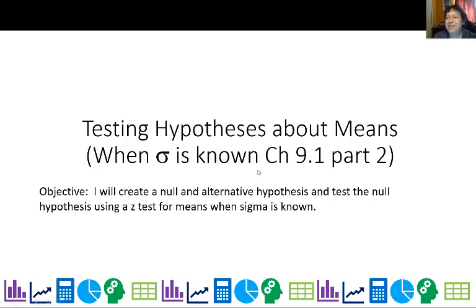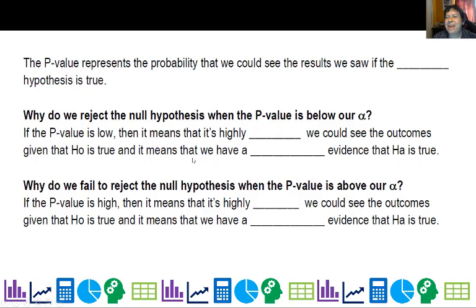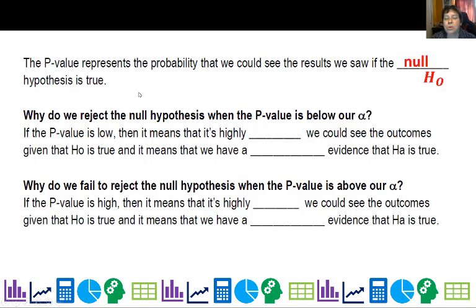Alright, so let's go ahead and revisit the p-value. The p-value represents a probability that we could see the results we saw if the null, H-naught, is true — the null hypothesis.